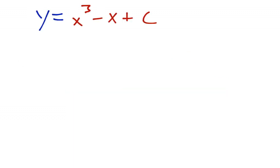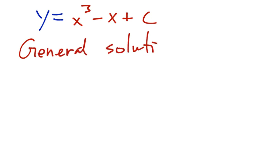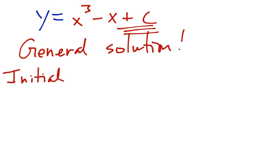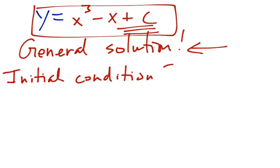The solution that we got is called the general solution. The reason it's called the general solution is because it has this plus c at the end. This solution is dependent on what's called an initial condition in order to actually get a specific function. When you solve differential equations, you're either going to solve for a general solution and your answer will have plus c, or you will be given an initial condition.